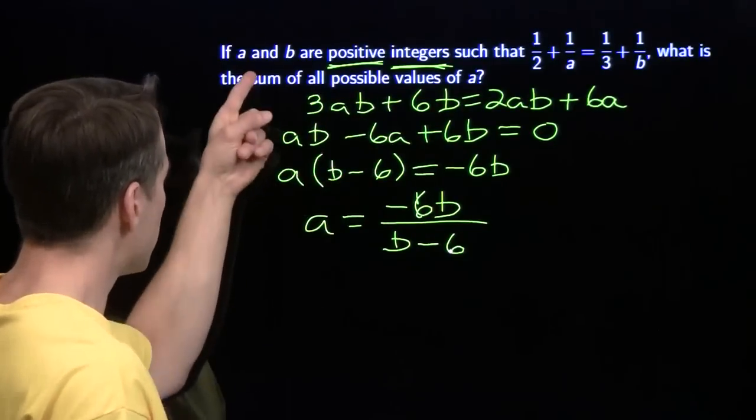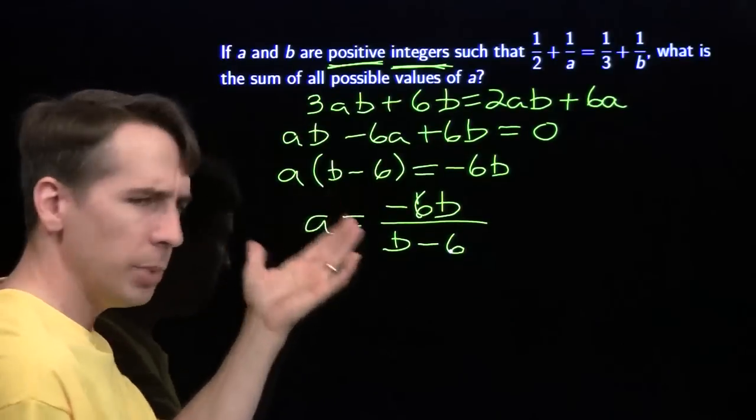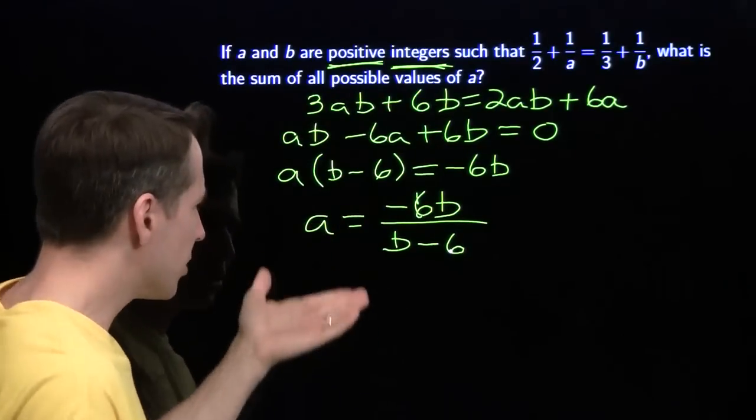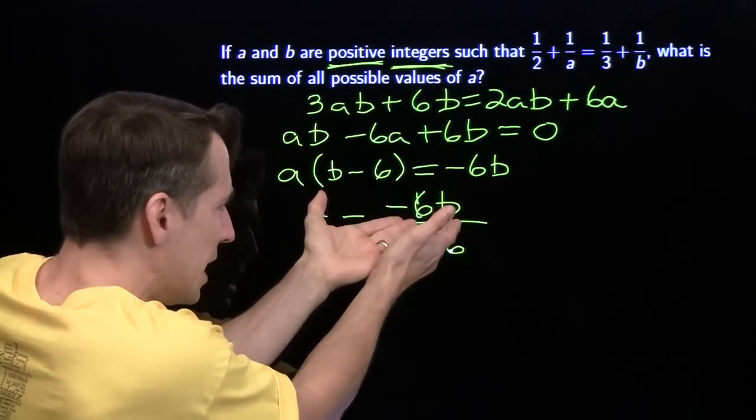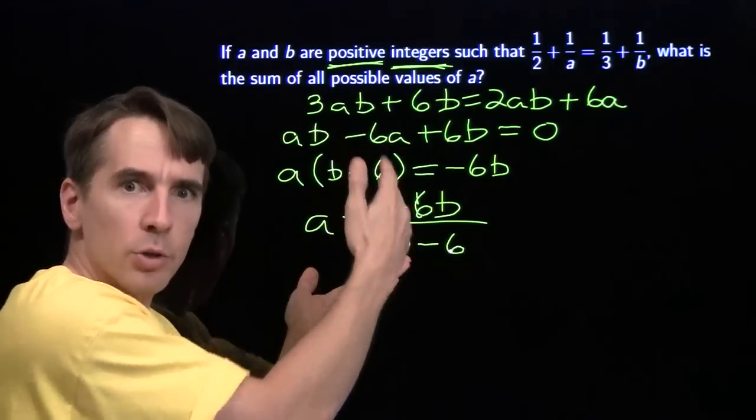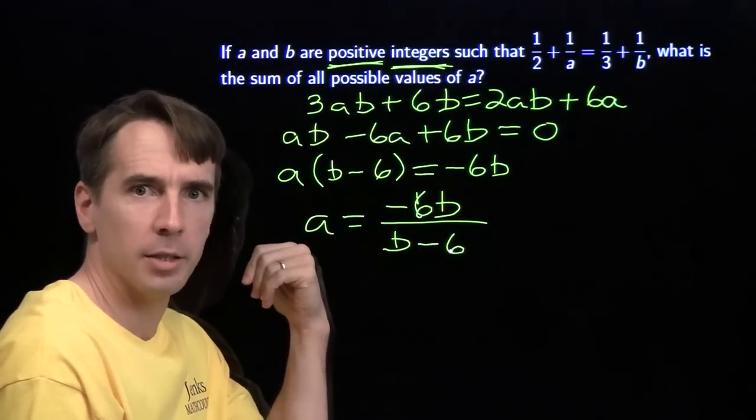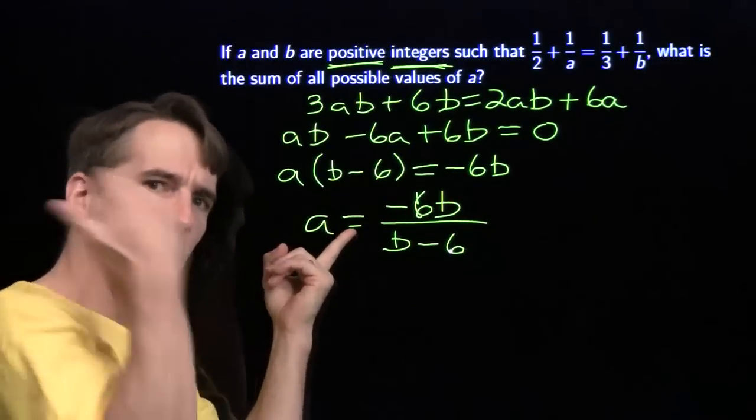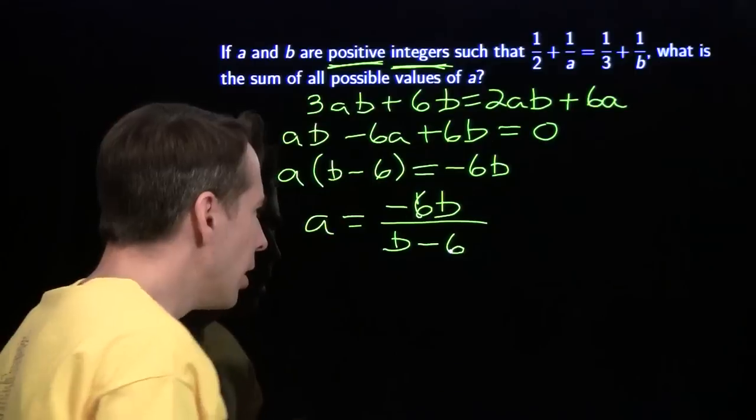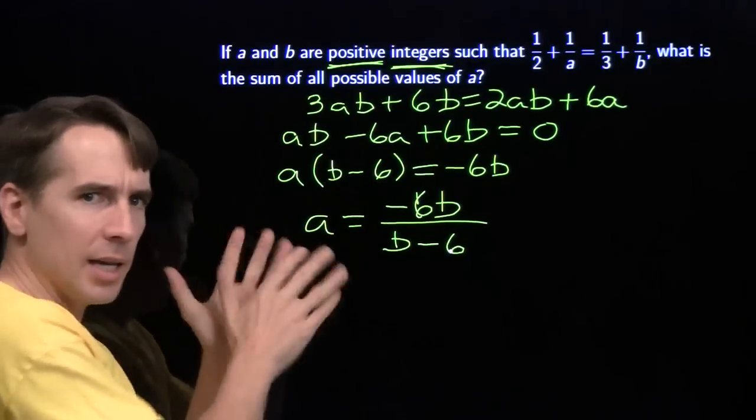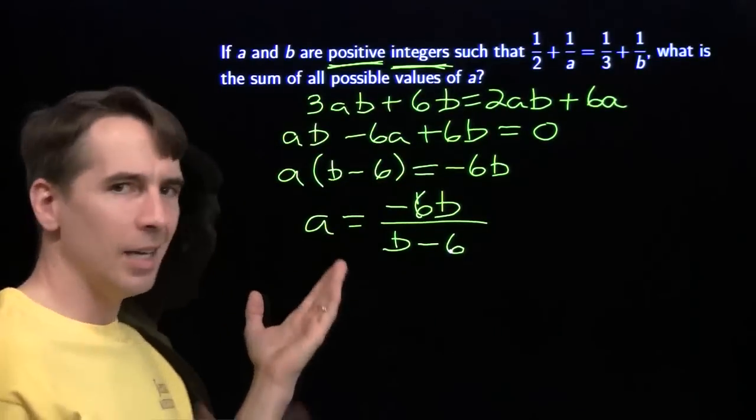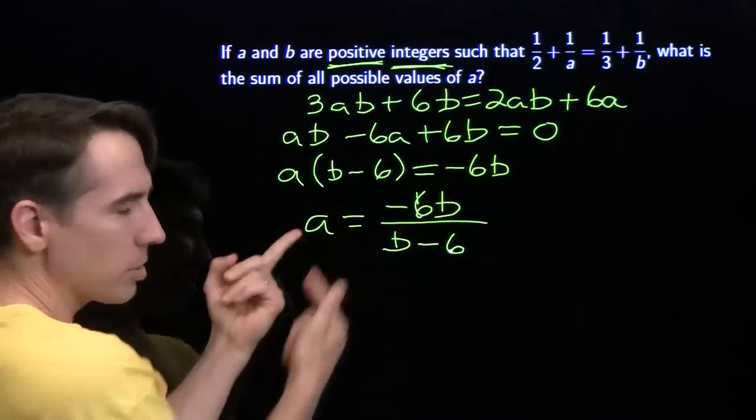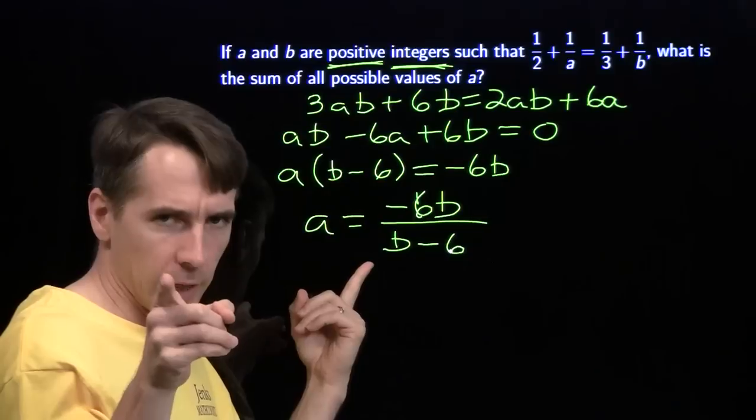Well, b has to be positive. But if b is large, let's say b is 1,000, the top here is negative, the bottom is positive, the quotient will be negative, but a has to be positive. In fact, if b is anything higher than 6, top is negative, bottom is positive, that makes a negative. That's no good. So b can't be higher than 6. It can't be 6 either because that will make the denominator 0.